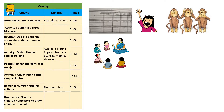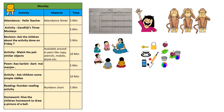Revision: ask the children to discuss the activities that were done on Friday. Match the objects: collect objects available nearby in pairs, like copy, utensils, mobile, stone, etc. Teach children to match the pairs of similar objects.